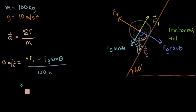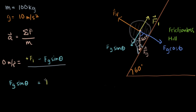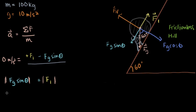Multiplying through gives zero, so we skip to the result: fg·sinθ equals F1. This is only the magnitude. F1 equals fg·sinθ equals mass times g times sin(60°).